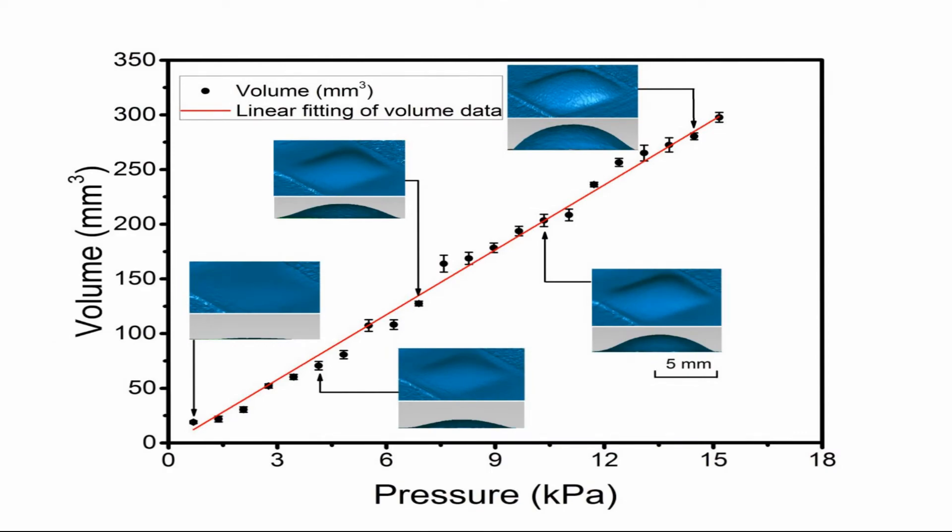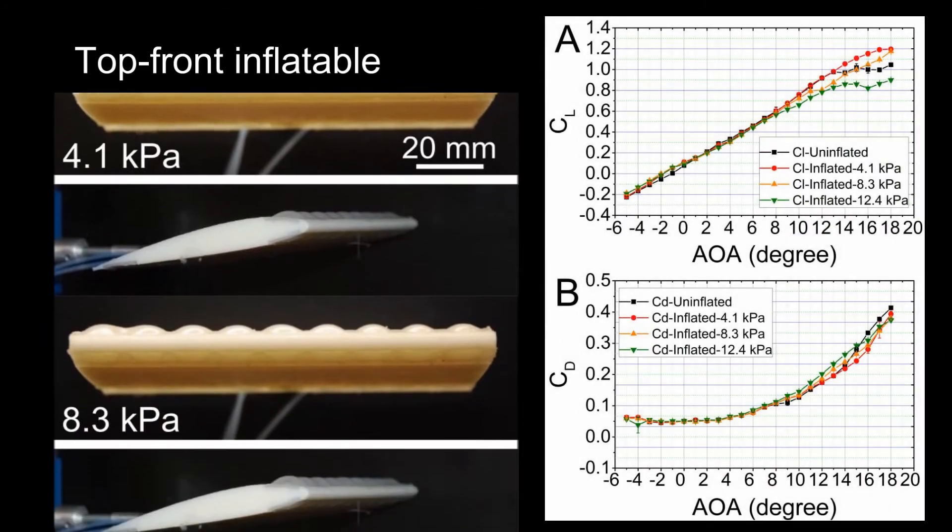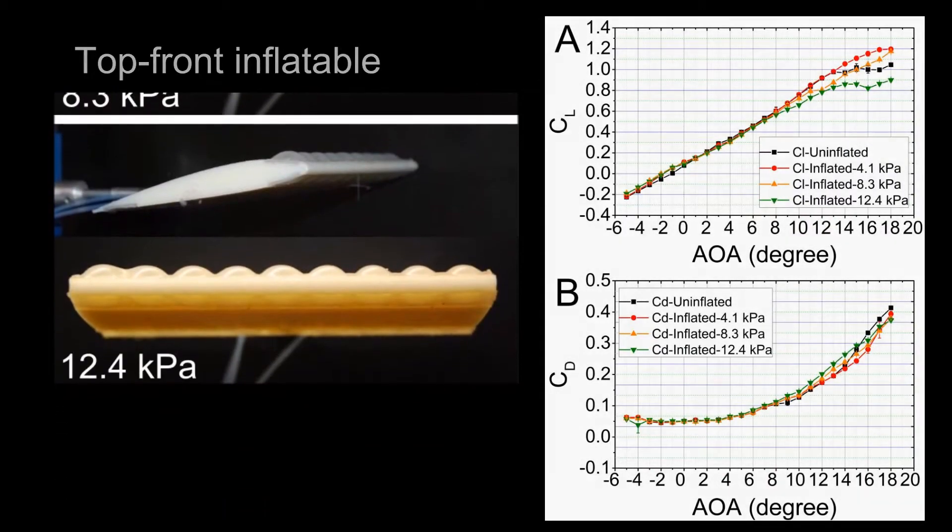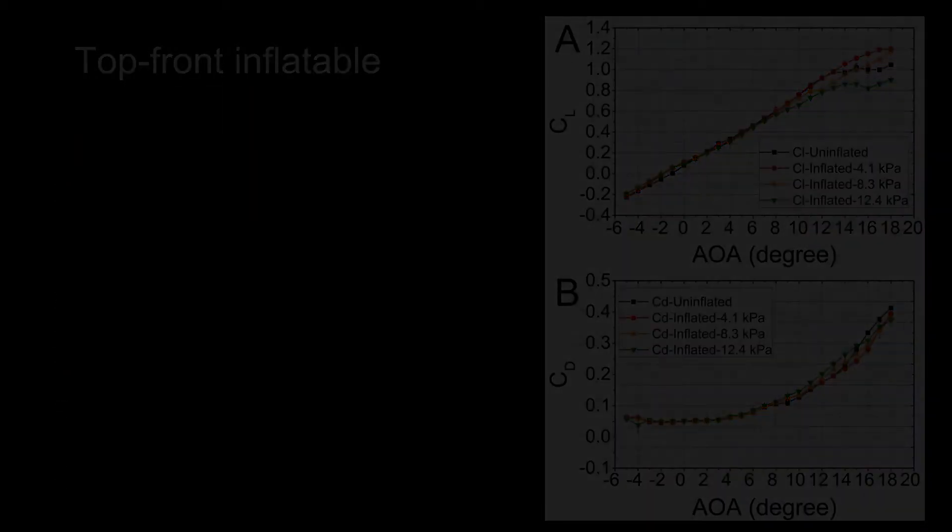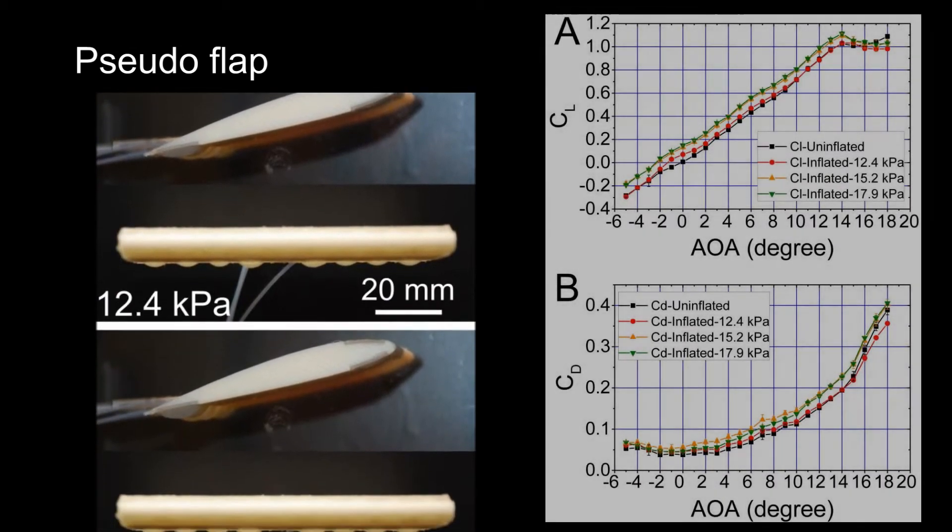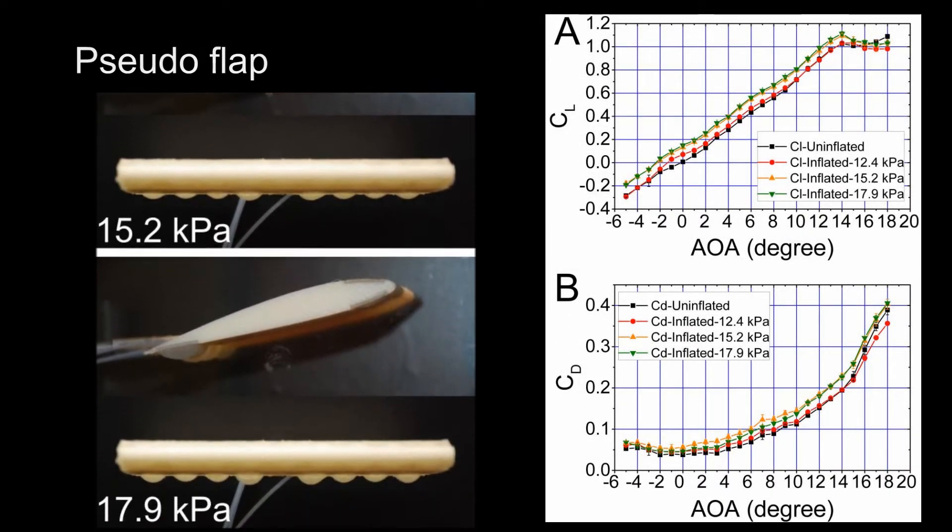The top front inflated design increases lift stalling angle at high angles of attack greater than 12 degrees. The pseudo flap near the trailing edge of the airfoil can increase lift by 20 to 300%.